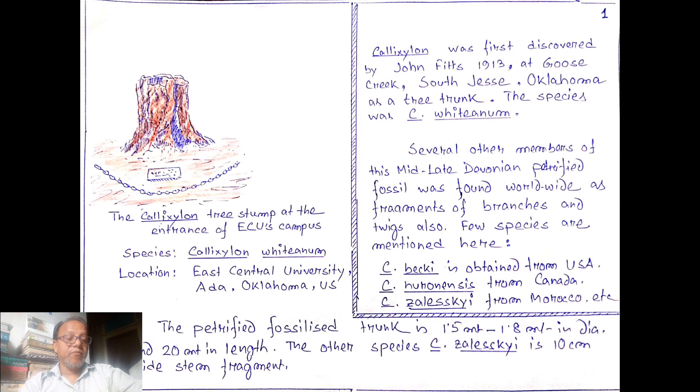Callixylon beckii was obtained from USA. Callixylon erianum was discovered from Canada. Callixylon zalesskyi from Morocco. The petrified fossilized trunk is 1.5 meter to 1.8 meter in diameter and 20 meter in length. Interestingly the Moroccan species has a 10 centimeter wide stem fragment.